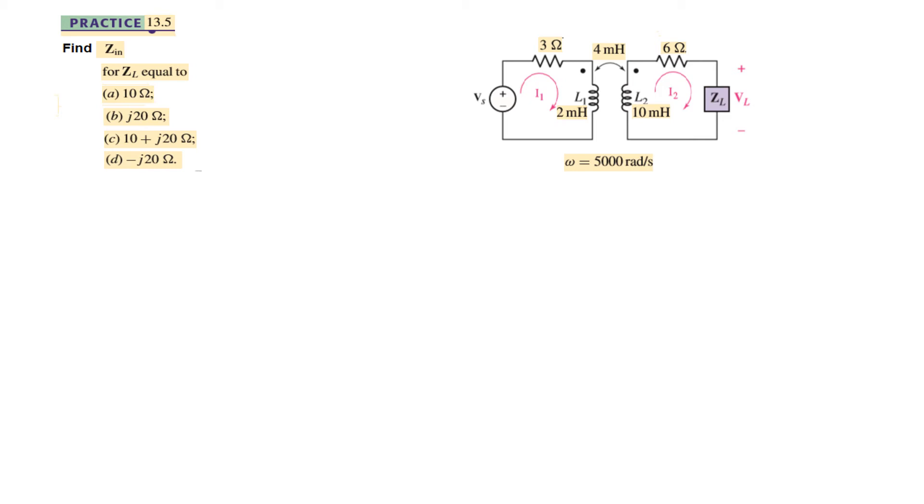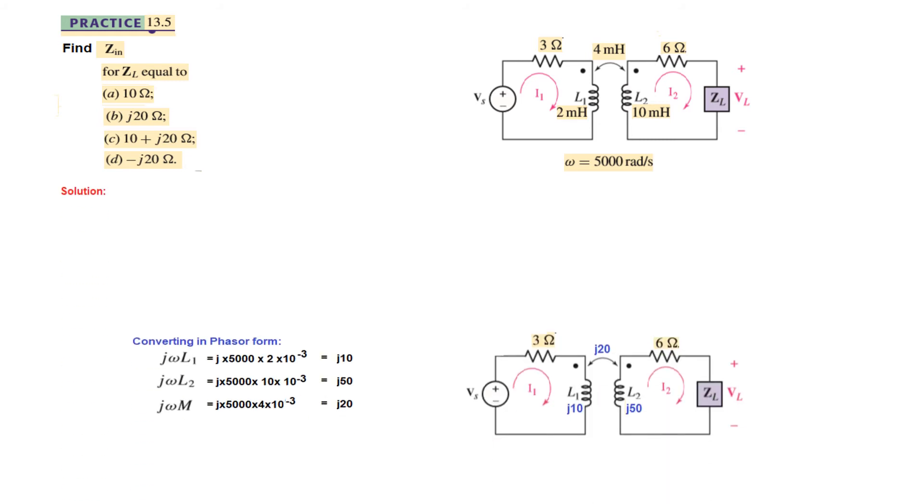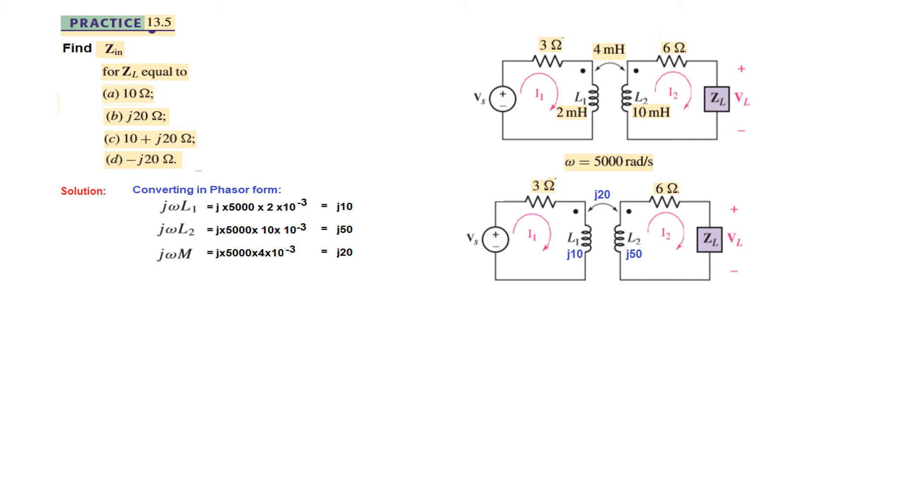Now let's solve the practice problem. For this circuit we have to find Zin. First of all we have to convert this into phasor form. Omega is given, so we just need to write j omega L1, j omega L2, and j omega m. Multiplying by omega we find all three values, then draw the circuit and plug in the values.